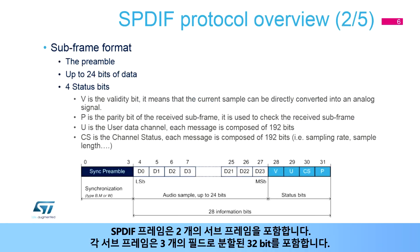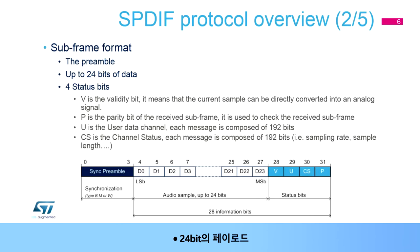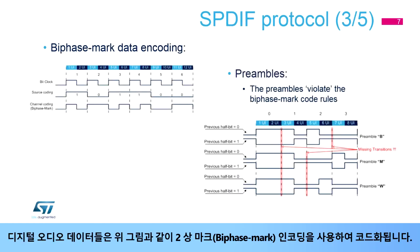An SPDIF frame contains two subframes. Each subframe contains 32 bits divided into three fields: a synchronization preamble allowing the detection of block and subframe boundaries, a payload of 24 bits, and status bits V, U, CS, and P. The digital audio data are coded using biphase mark encoding, as shown in the upper figure.